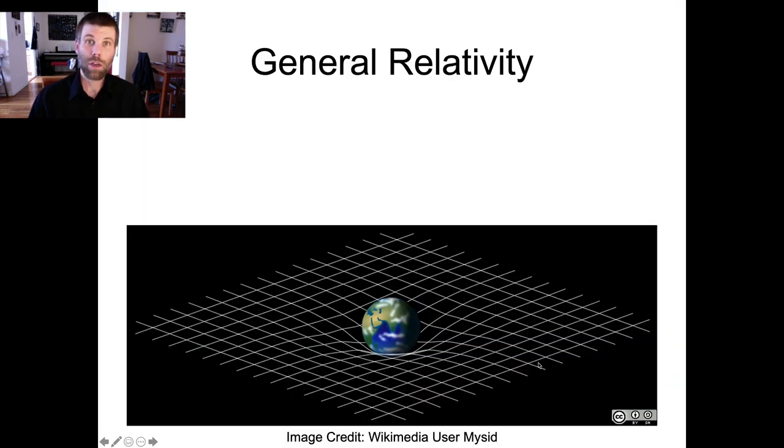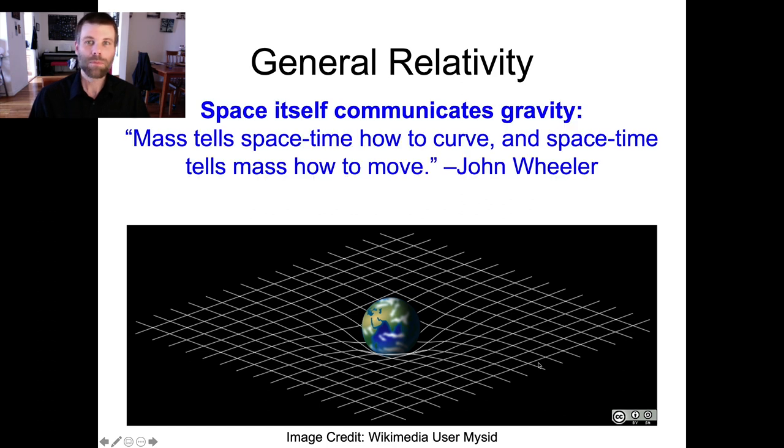We'll begin by talking about general relativity very briefly. General relativity is the modern theory of gravity. It's the idea that when you put a massive object in space, the mass of that object causes spacetime to curve. This is summed up in a famous quote from physicist John Wheeler: mass tells spacetime how to curve and spacetime tells mass how to move.